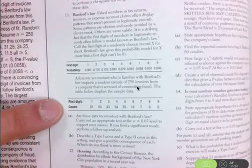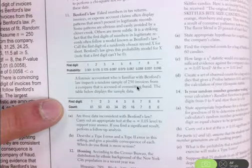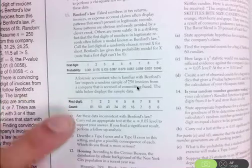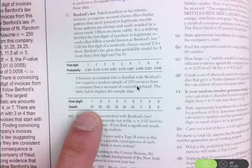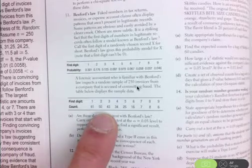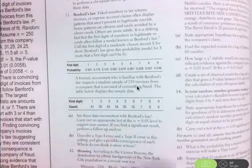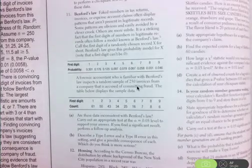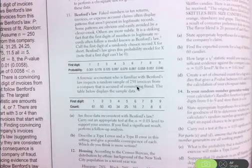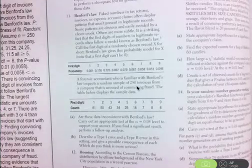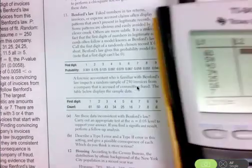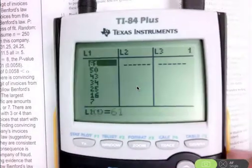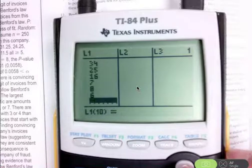These are the observed counts right here. We've taken a random sample of 250 invoices, and these were the counts: 61 of those invoices had a first digit of 1, 50 had a first digit of 2, and so forth. These are the values that you want to enter into list 1.